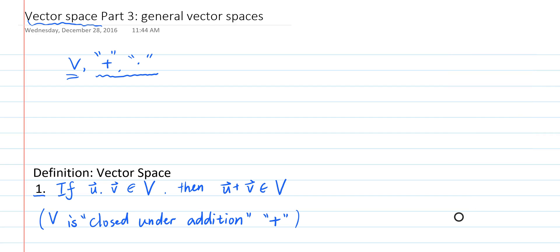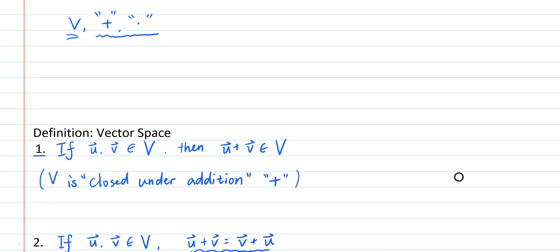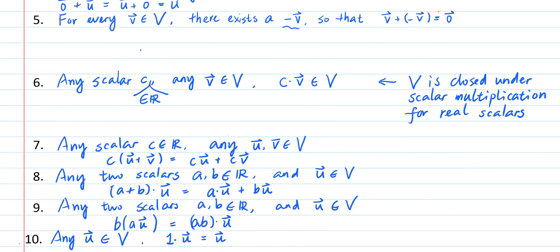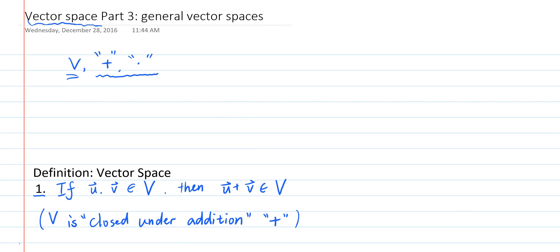As it turns out, there are other sets V for which an addition and scalar multiplication can be defined, so that if you replace R^n with the set V in the 10 properties, then V together with the two operations have the same 10 properties.